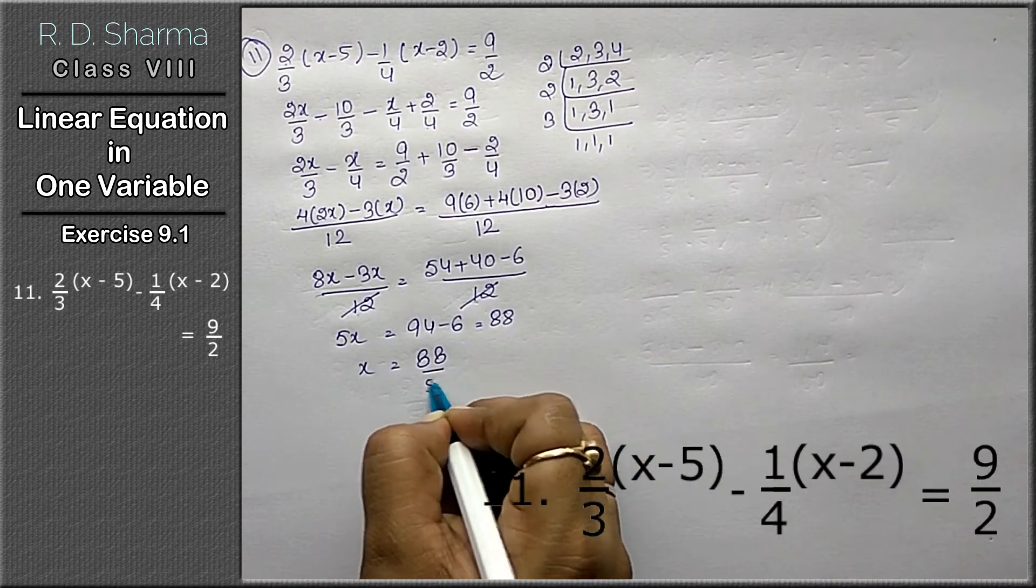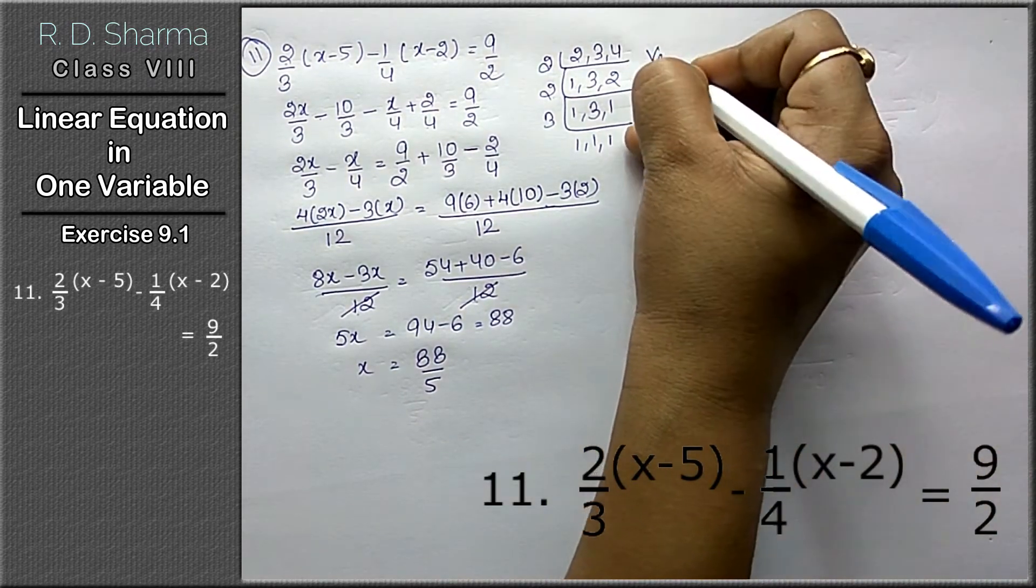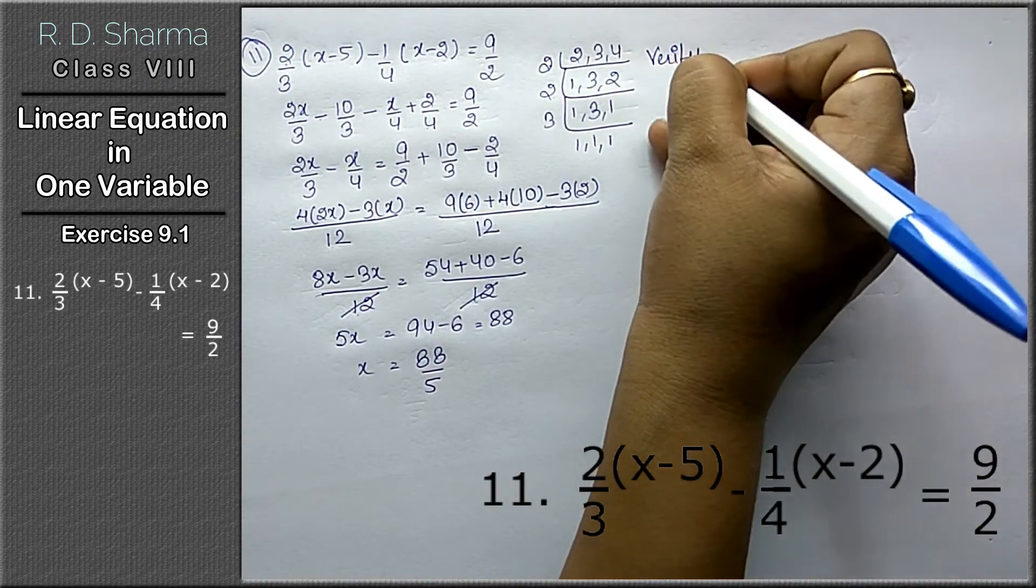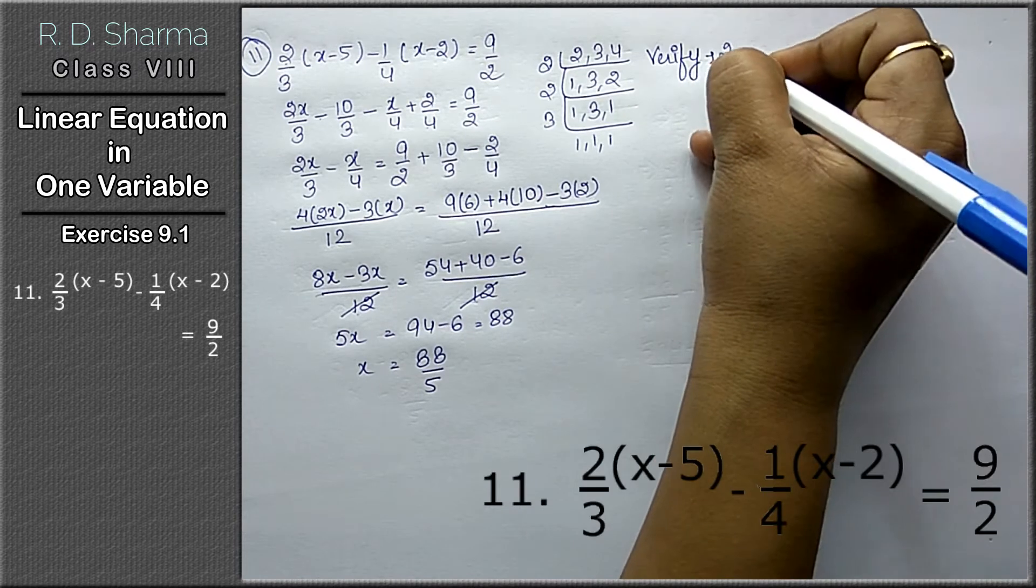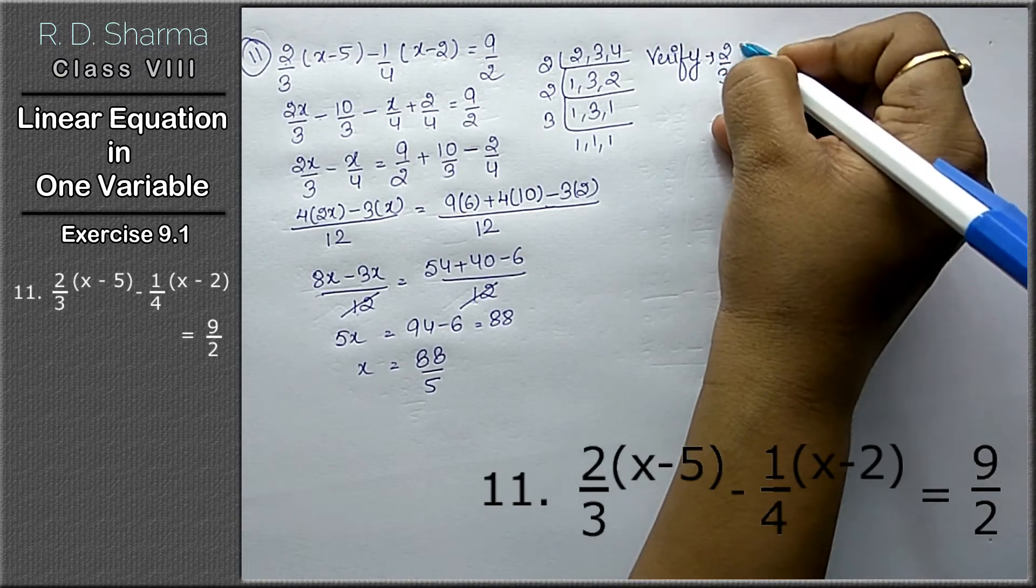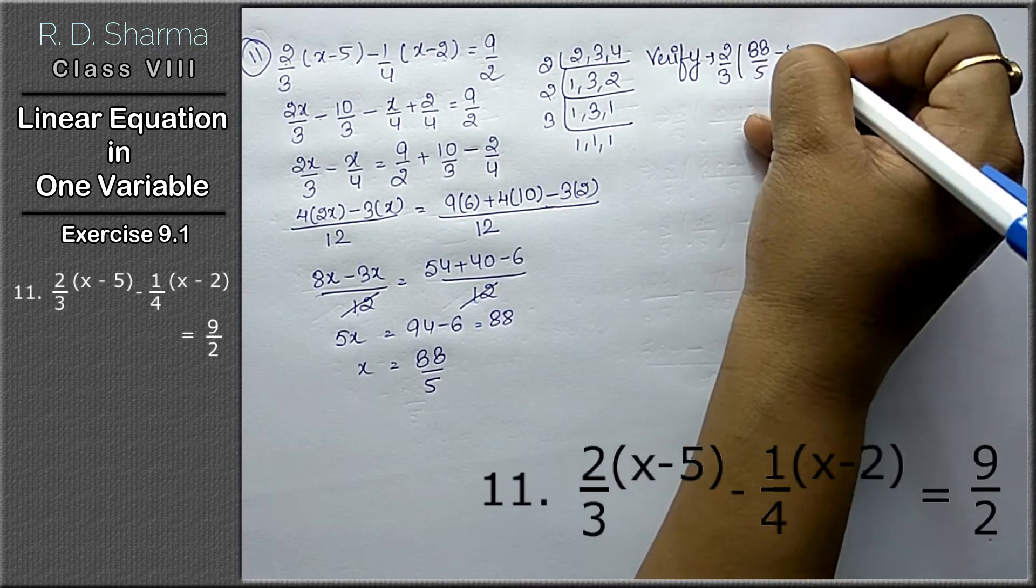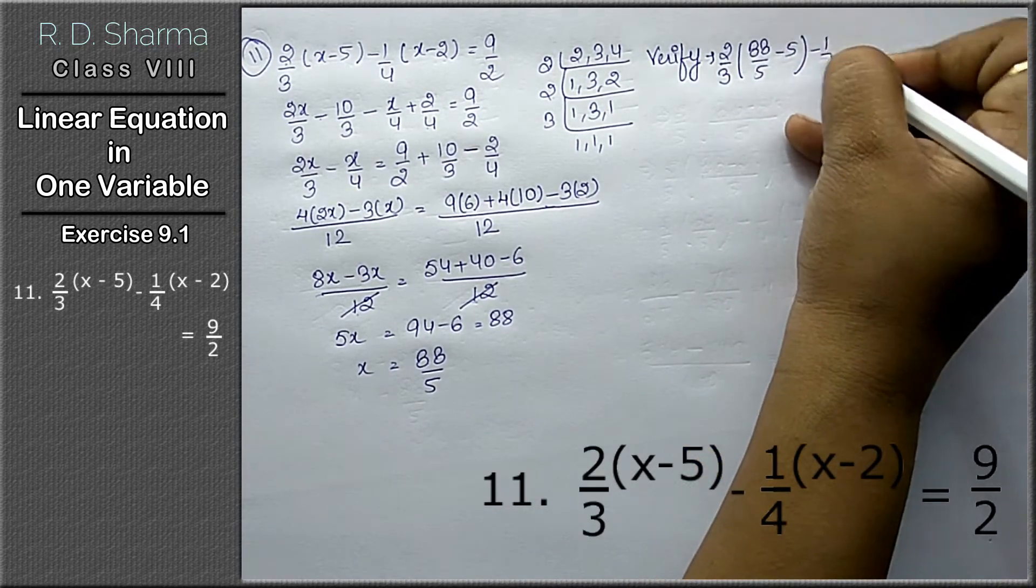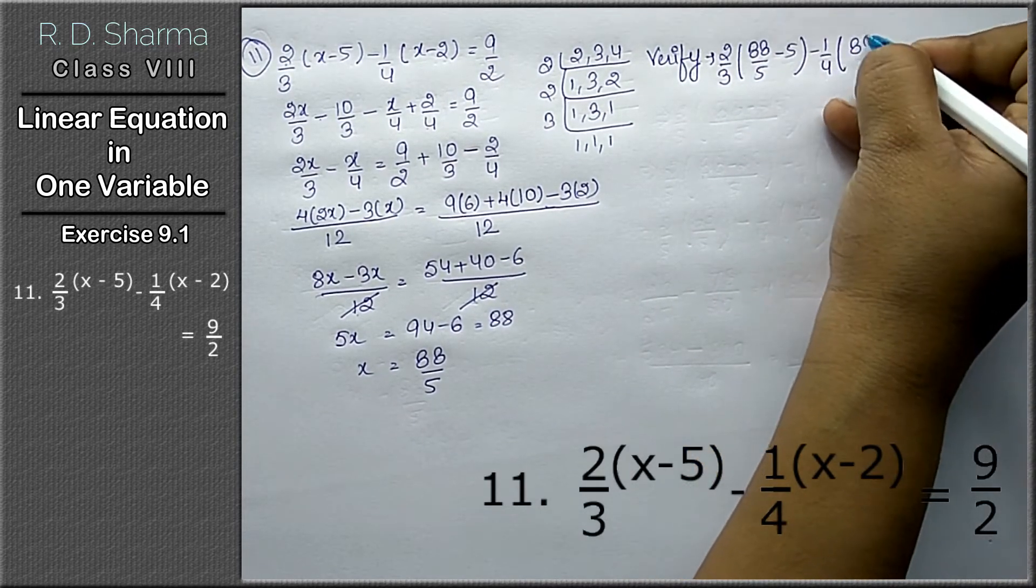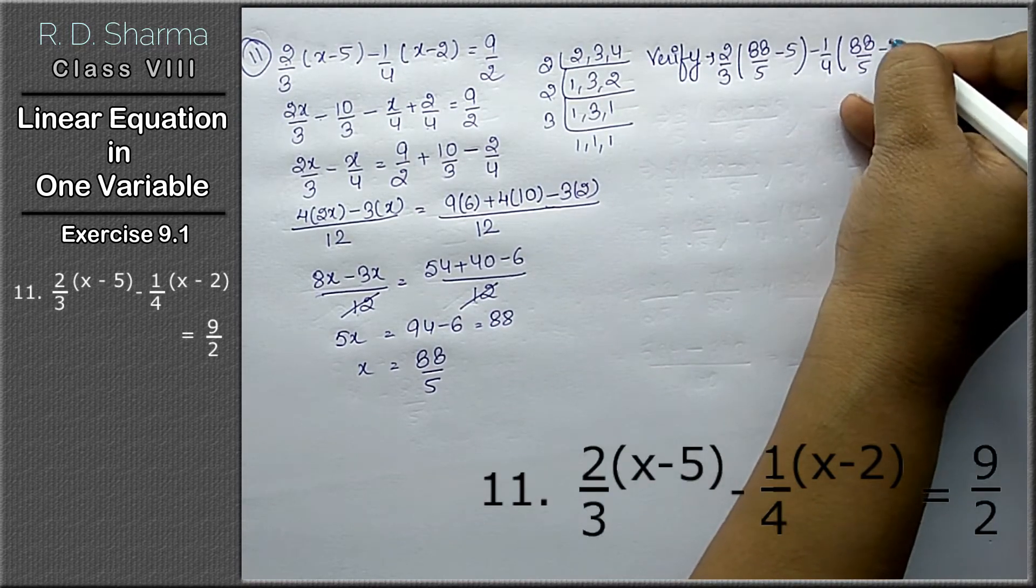Now we will verify our question. To verify, we'll substitute x. 2 upon 3 (88 upon 5 minus 5) minus 1 upon 4 (88 upon 5 minus 2).